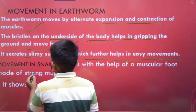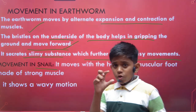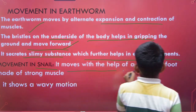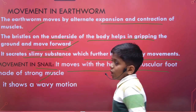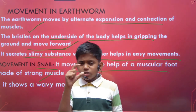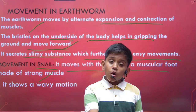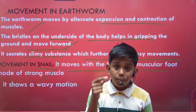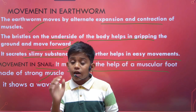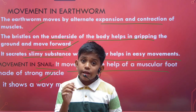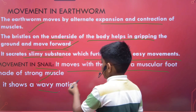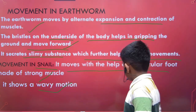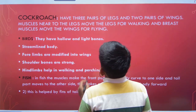Next we have the snail, which has a shell and moves slowly with the help of its muscular foot — a strong muscle. The snail is a very small creature with a very hard shell, and its muscle is so strong that even on a sharp blade it does not get cut. The snail shows a wavy, zigzag motion.